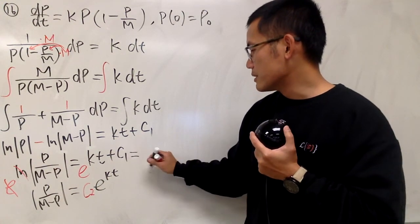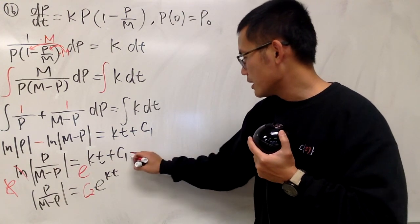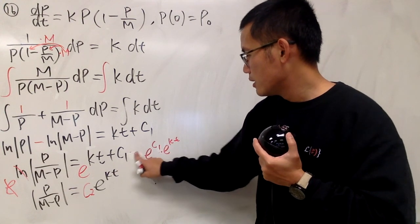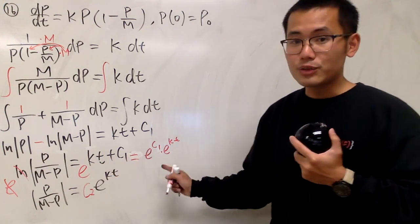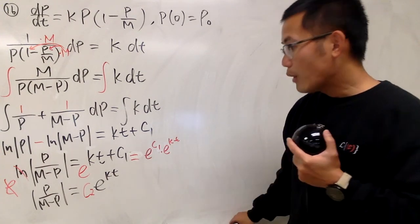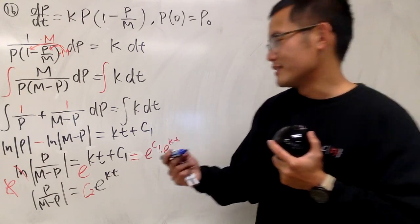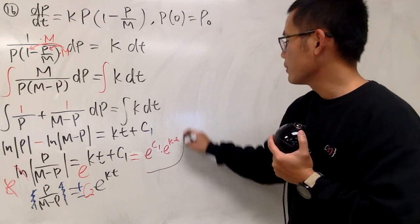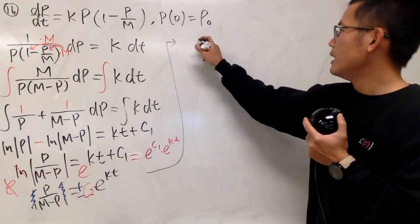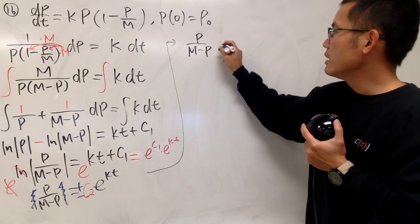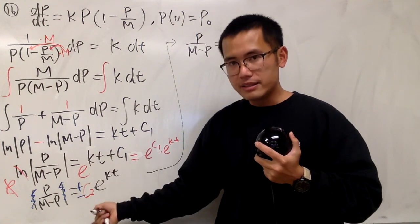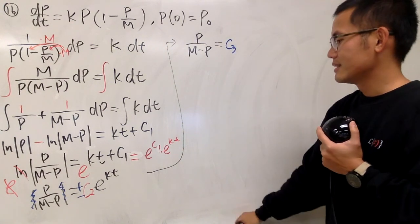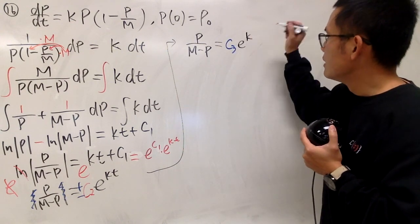So I'll have the absolute value of p/(m-p) equals e to the kt. This is just the function part, so keep it. But e to the c₁ is just c₂. Because this is the same as saying e to the c₁ times e to the kt. So this part is the same as that, which is why this is c₂. Now how can we get rid of the absolute value? I will just get rid of the absolute value literally, but don't forget the plus minus.